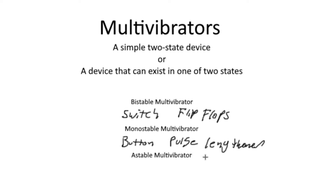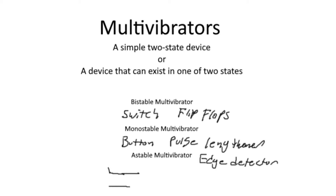Another type of monostable multivibrator is one we've already covered: an edge detector. An edge detector is a monostable multivibrator that produces a pulse every time it detects the edge of a trigger signal. If the monostable multivibrator is in its stable low state, it will remain low until its trigger transitions from low to high, at which point it enters its unstable state for a short period of time — just detecting that brief moment where the trigger signal is transitioning from low to high.